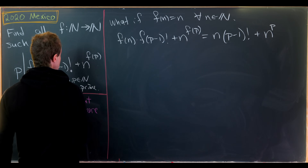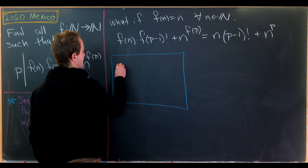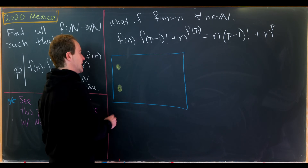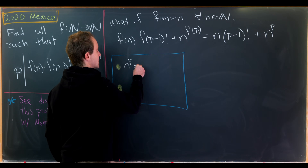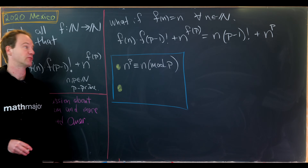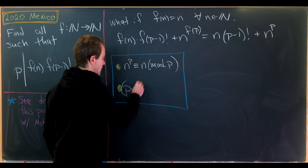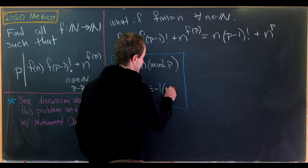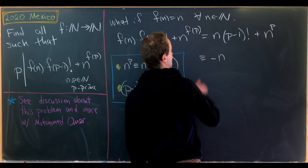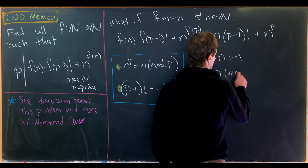There are two results from elementary number theory which jump out from this simplified expression. One is Fermat's Little Theorem: n^p ≡ n mod p for any natural number n and prime p. The other is Wilson's Theorem: (p-1)! ≡ -1 mod p. Using those two results, the first term becomes -n and the second term becomes n, which is congruent to 0 mod p.